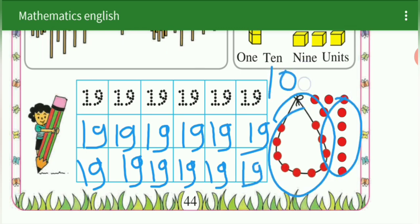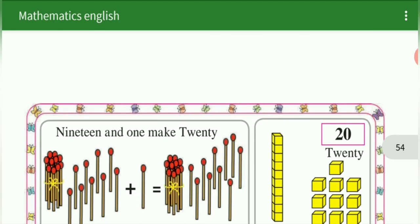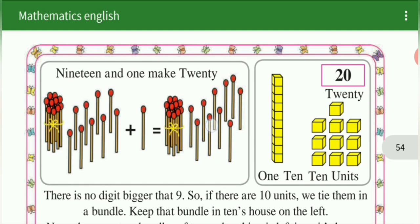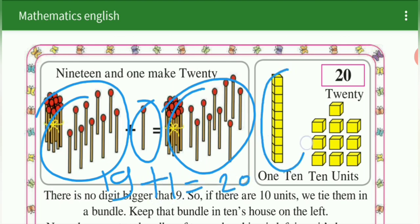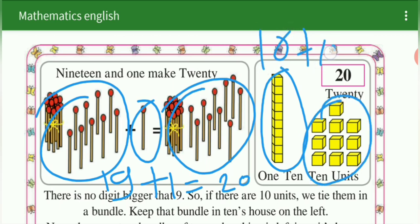19 beads. Last one — we are going to learn 20. See here: 19 plus 1 make 20. 19 matchstick plus 1 matchstick is equal to 20. See here — 1 ten plus 10 unit. 10 plus 10 is equal to 20.